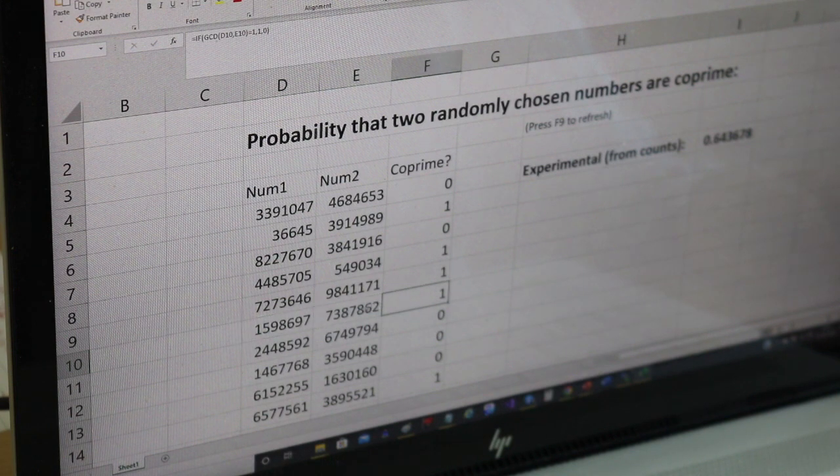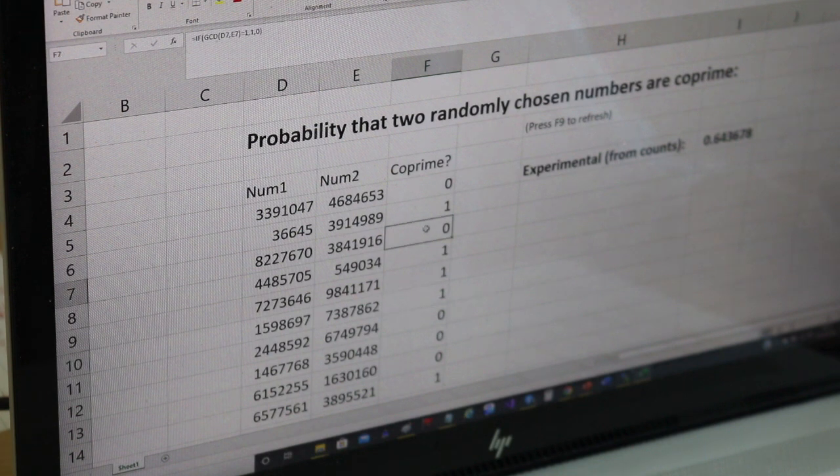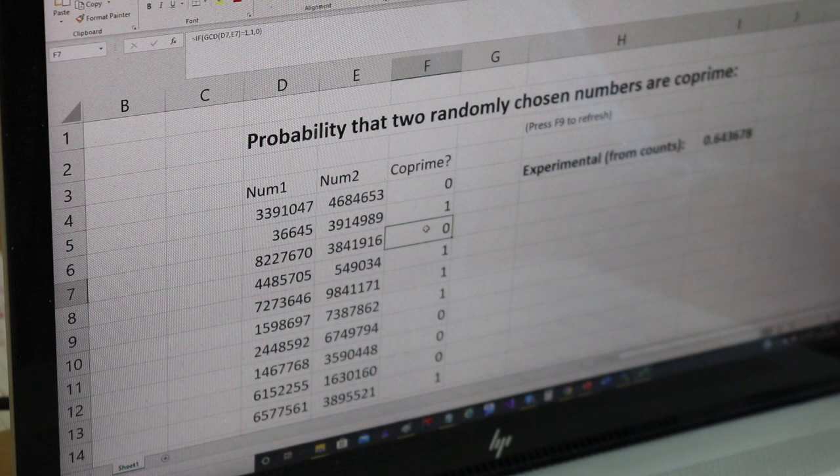So this says one because the two numbers are coprime, they don't share a factor, whereas if it has zero it means they're not coprime, so they do share a factor other than one. And we can see these are both even so they obviously share a factor of two.